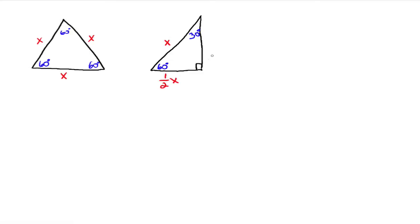Since it's a right triangle, we can figure out what the height is by the Pythagorean theorem, and you'll end up with the square root of 3 over 2 times x.